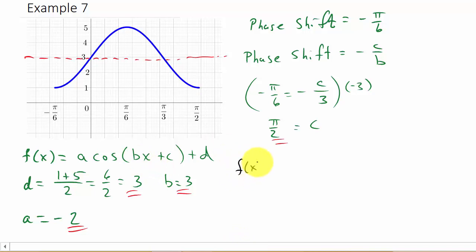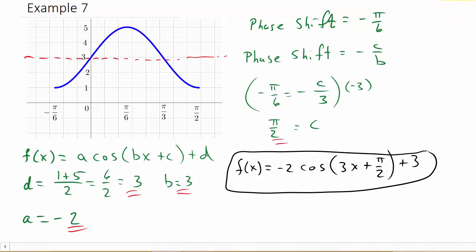So, all we do now is just plug it in. So, f(x) is equal to a, which is negative two. Cosine bx, well, let's see, b is three, so that's 3x. Okay. Then it's plus c. Well, c is π over two. Okay. And then plus d. So, that would be plus and d is three. And so that would be your function. Alright, so I hope this helped. Give me a like, subscribe, share it, and thanks for watching.